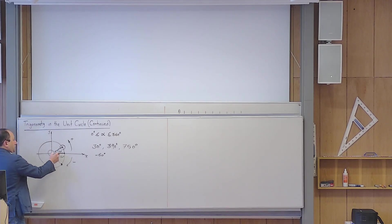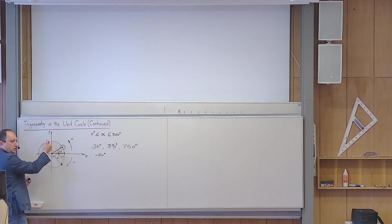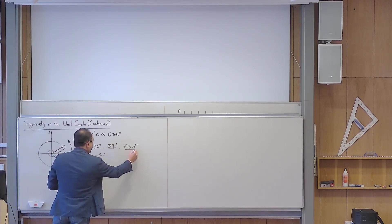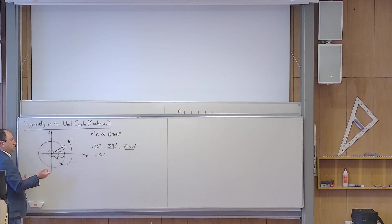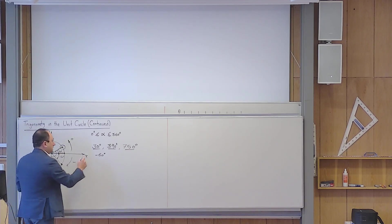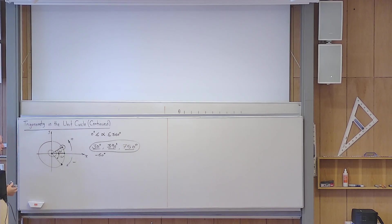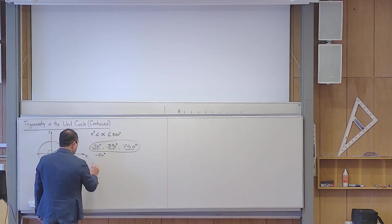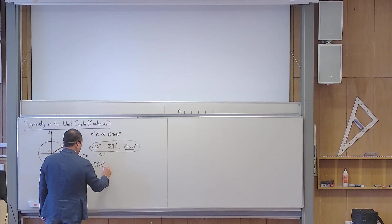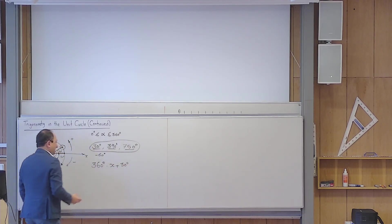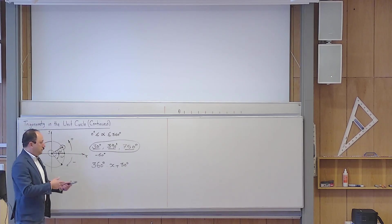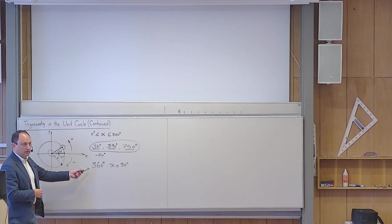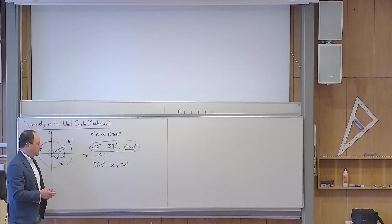All these angles have something in common: they all end up at the same point on the unit circle. If someone asks you how many angles end up at this point — infinitely many. So the formula is 360 degrees multiplied by n plus 30 degrees. But you have to specify what n is. It's not complete unless you define n. You need to say that n is a whole number, or more precisely, an integer.